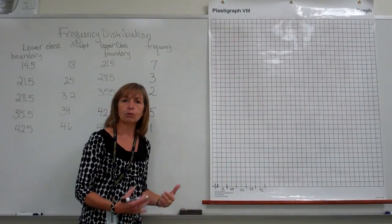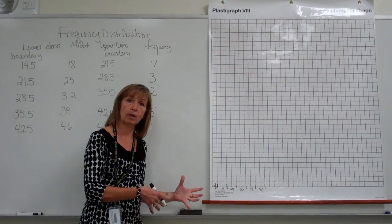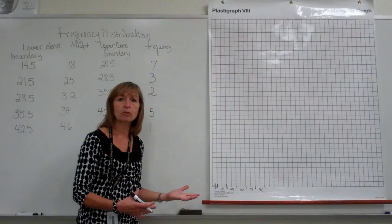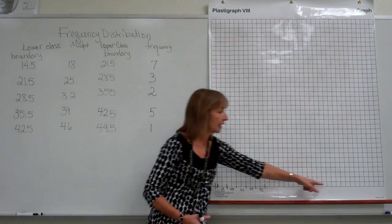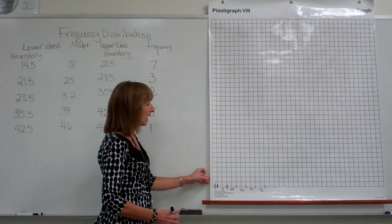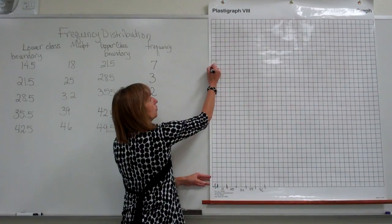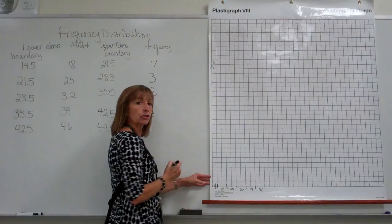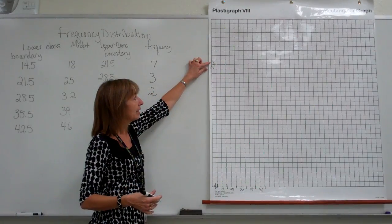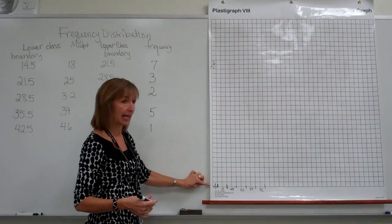We didn't have any actual application that those numbers went to. But if it were like hours of study for an exam or something, then that's what you would label along the horizontal axis, what it meant. Now along the vertical axis, we are going to use the frequencies. So we'll just use the first letter of the word frequency. So F as my label for my vertical axis.